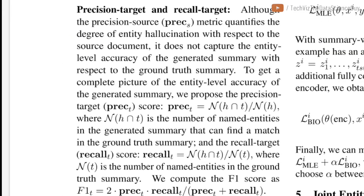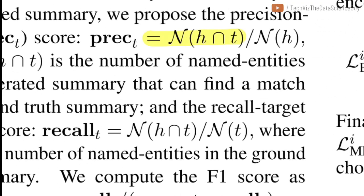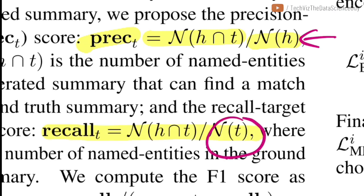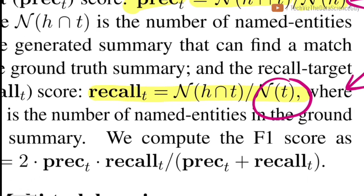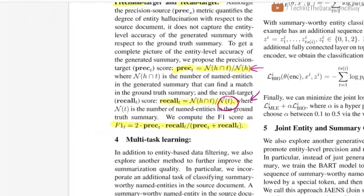The other two metrics defined are precision and recall with respect to the target. The formula is the intersection of entities between the ground truth summary and the generated one, divided by the total number of entities generated — essentially how many generated entities also appear in the ground truth summary. For recall, you divide by the number of entities in the original summary, capturing how many ground truth entities appear in the generated summary. Combining these gives a precision, recall, and an F1 score as a single holistic metric.